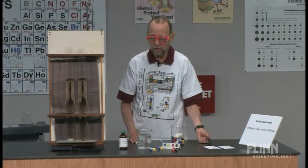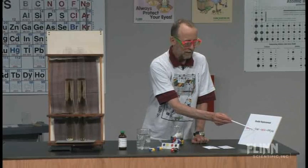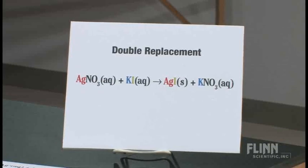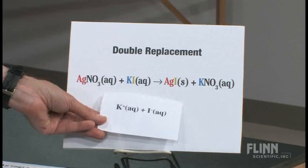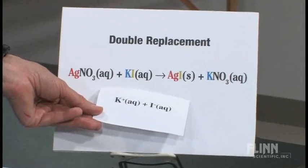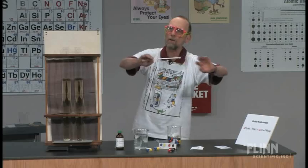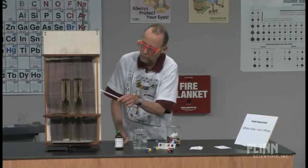We put it into water, so now we have potassium iodide that's aqueous. Now keep in mind when you see that in the book, aqueous really means potassium ions and iodide ions separated. There's two separate species swimming around in solution. That's what's in here.